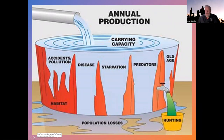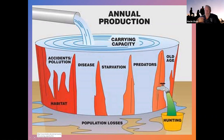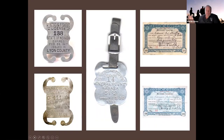Think of it like a big bucket — once carrying capacity is full, things spill over. Accidents, pollution, disease, starvation, predators, and old age we can't fully control, but there's a spigot on the side labeled 'hunting.' We can turn hunting up or down to regulate the bucket so it doesn't overflow. That's one of the most important things to realize for big game and small game hunting. We can control the population we have and maintain animal populations at their healthiest levels.